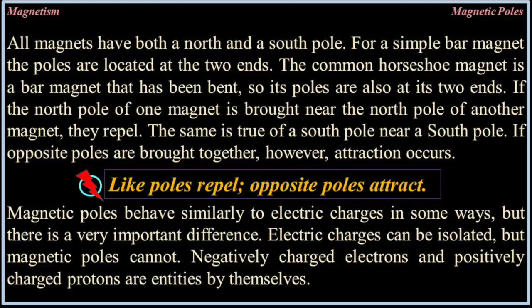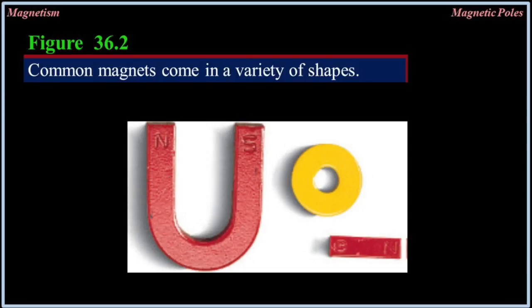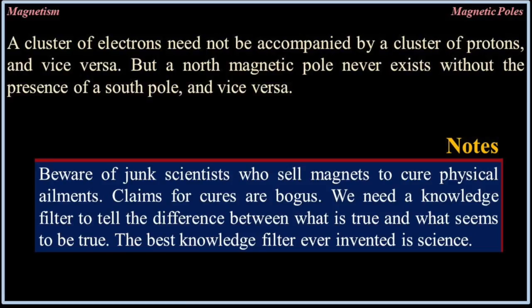Magnetic poles behave similarly to electric charges in some ways, but there is a very important difference. Electric charges can be isolated, but magnetic poles cannot. Negatively charged electrons and positively charged protons are entities by themselves. A north magnetic pole never exists without the presence of a south pole and vice versa.